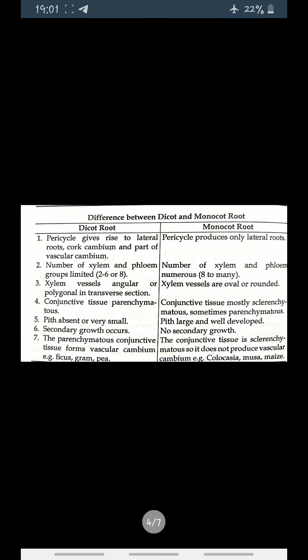In monocots, xylem and phloem groups are oval or rounded in transverse section. Conjunctive tissue in dicots is parenchymatous. In monocots, conjunctive tissue is mostly sclerenchymatous, sometimes parenchymatous.